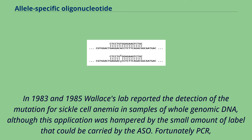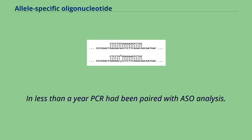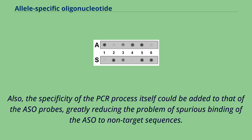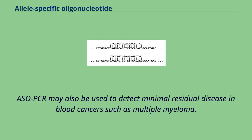Fortunately, PCR — a method to greatly amplify a specific segment of DNA — was also reported in 1985. In less than a year, PCR had been paired with ASO analysis. This combination solved the problem of ASO labeling, since the amount of target DNA could be amplified over a million-fold. Also, the specificity of the PCR process itself could be added to that of the ASO probes, greatly reducing spurious binding to non-target sequences. The combination was specific enough for use in a simple dot blot, avoiding the laborious southern blot method. ASO-PCR may also be used to detect minimal residual disease in blood cancers such as multiple myeloma.